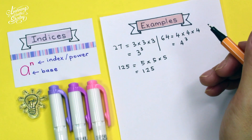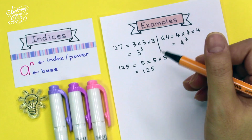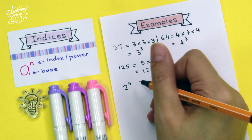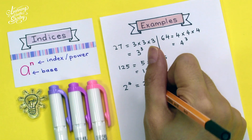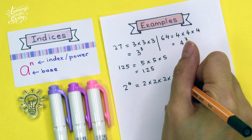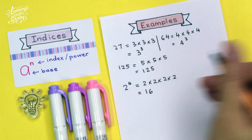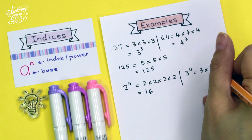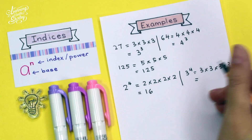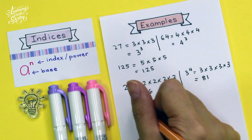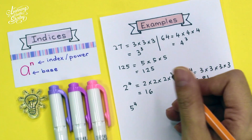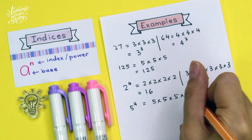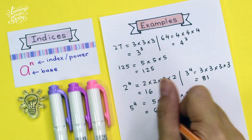To find the value of a number in index form, for example 2 to the power 4 times 4 times 4 times 2 times 2 times 2 times 2 equals 16. If it is 3 to the power 4, that is 3 times 3 times 3 times 3, which equals 81. And 5 to the power 4 is 5 times 5 times 5 times 5, which equals 625.